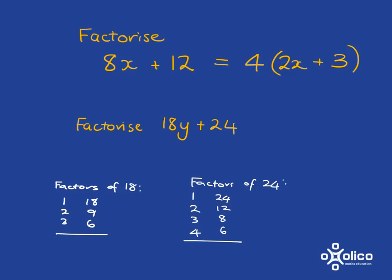Now all you need to do is have a look at these two lists of factors and see what is the biggest number that occurs in both the lists, and you can see hopefully quite easily that that is 6. So 6 is our highest common factor, so we're going to pull out a 6, and we'll see here that 18y divided by 6 is 3y, and 24 divided by 6 is 4, and it's a plus 4 because it's a plus 24, and if we want to just check, 6 times 3y is 18y, 6 times 4 is 24, we've got it right.